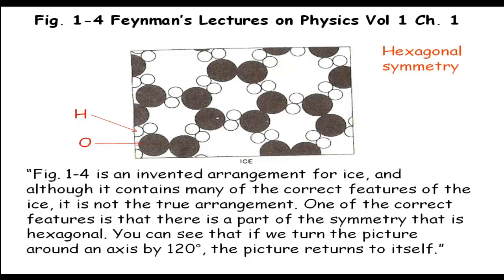However, hexagonal symmetry means a rotation by 360 divided by 6, equal to 60 degrees, and not 120 degrees. So there is a mistake in the text. It should not be 120 degrees. It should be 60 degrees.